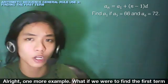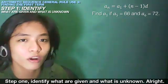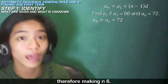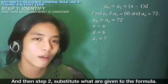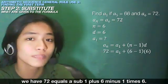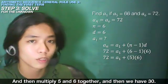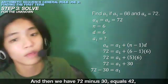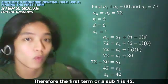One more example: find the first term if the fifth term is 66 and the sixth term is 72. Step 1: a sub n equals 72 (the 6th term), n equals 6, and d equals 72 minus 66 equals 6. The unknown is a sub 1. Step 2: plug into the formula — 72 equals a sub 1 plus 6 minus 1 times 6. Step 3: solve — 5 times 6 is 30. Subtracting 30 from 72 gives 42. Therefore, a sub 1 equals 42.